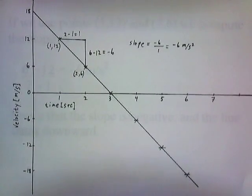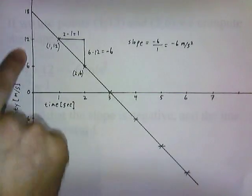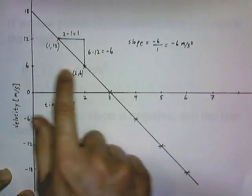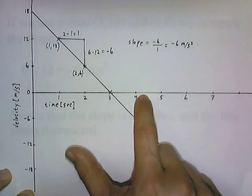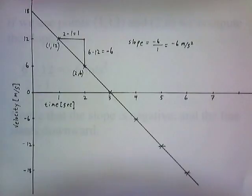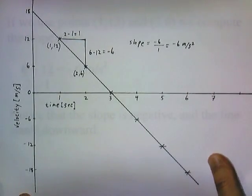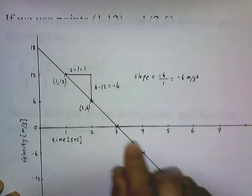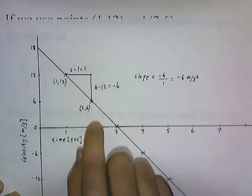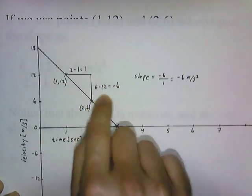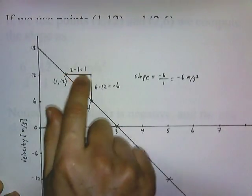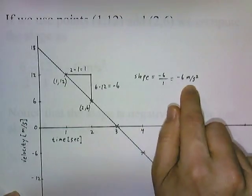At time 0 you're going at 18 meters per second, at 1 second 12 meters per second, at 2 seconds 6 meters per second, at 3 seconds velocity is 0, and at 4 seconds it's negative 6. Using points (1, 12) and (2, 6), the slope is 6 minus 12 over 2 minus 1: the vertical change is negative 6 and the horizontal change is 1, so the slope is negative 6 meters per second squared. Notice that the slope is negative and the line slants downward.